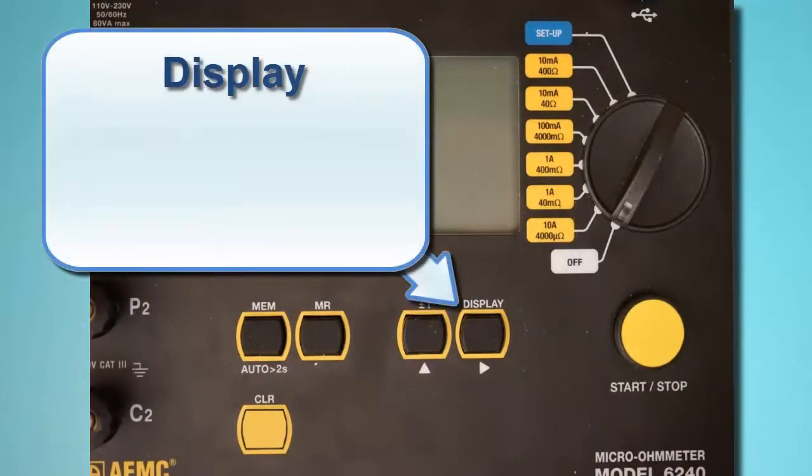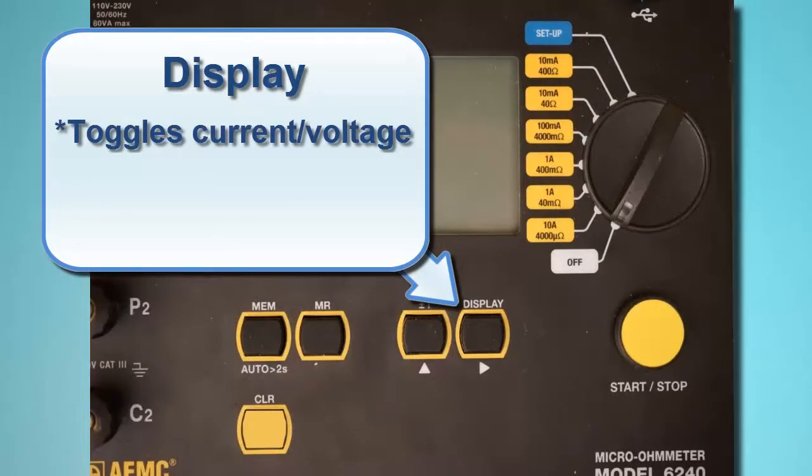Display toggles between displaying current measurements and voltage measurements. This button also functions as a right arrow in user configurable screens.